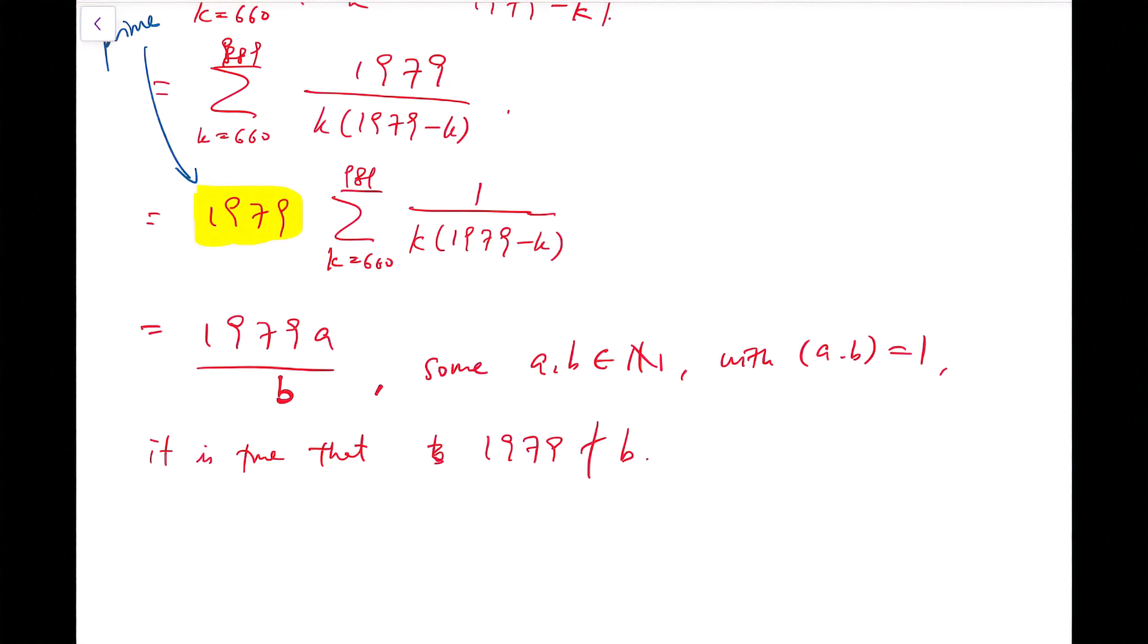So that means this is actually the simplified form of the fraction. Therefore, the numerator p must be divisible by 1979.